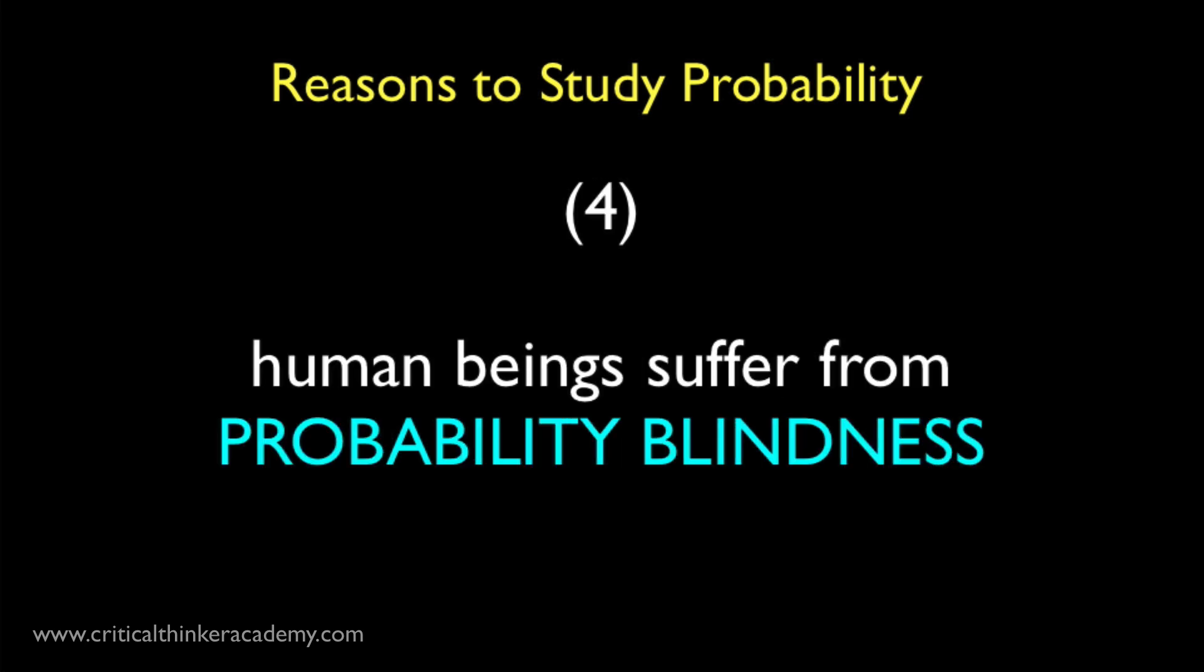Fourth, human beings suffer from what some have called probability blindness. On our own, we're very bad at reasoning with probabilities and uncertainty. Or, to put it another way, we're very susceptible to probabilistic fallacies. And this fact about us is absolutely essential to understand if we're going to devise strategies for avoiding these fallacies.